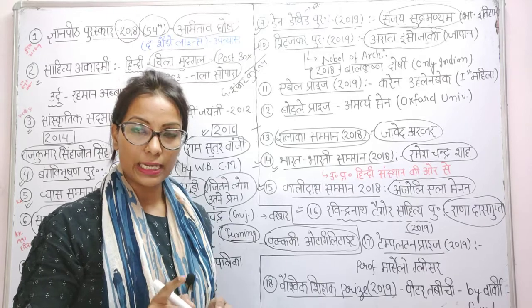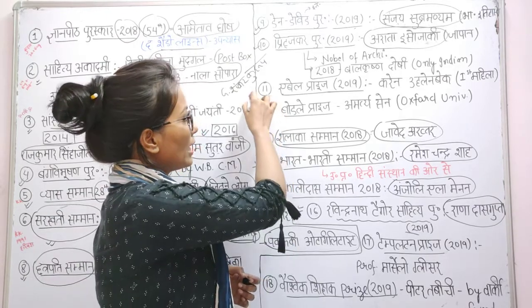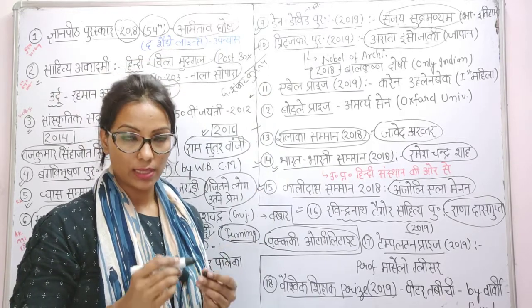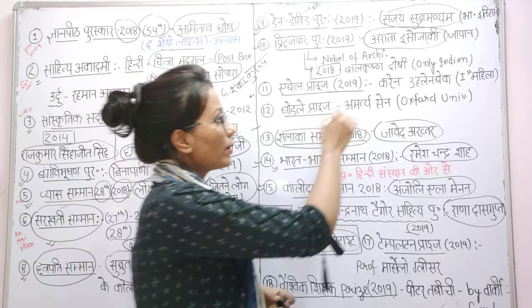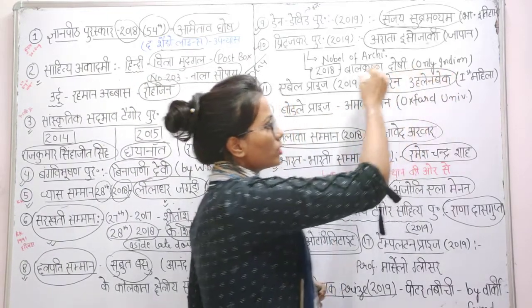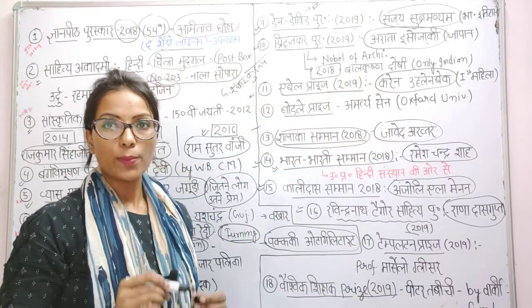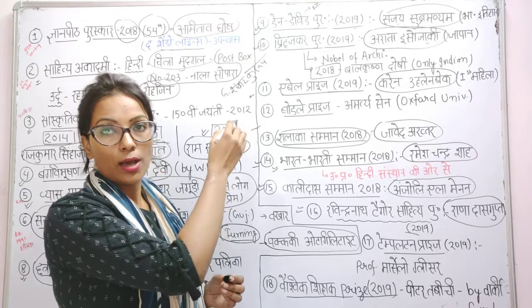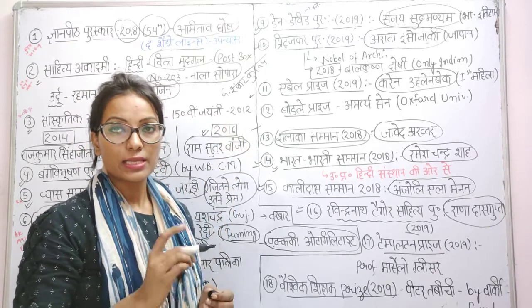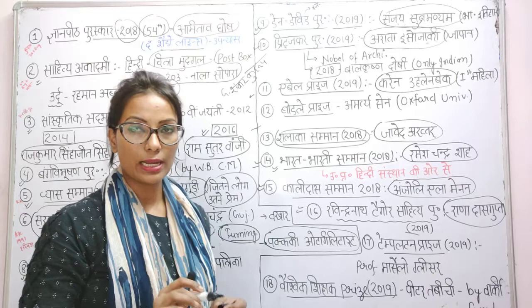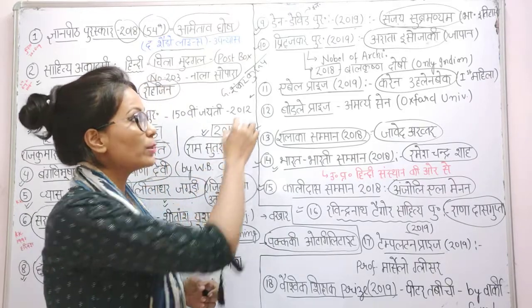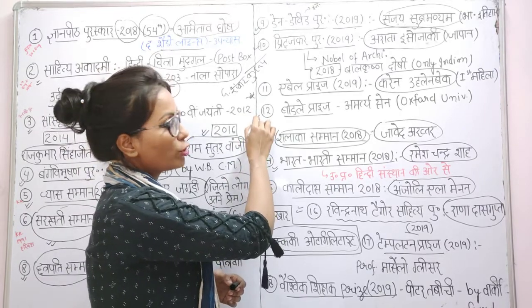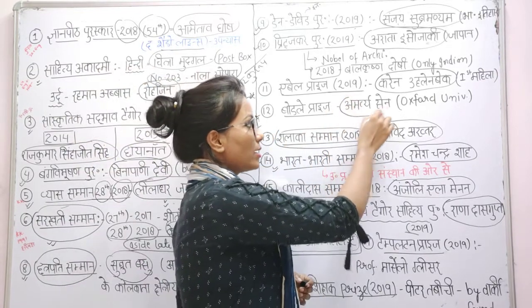This is notable because it is the first Indian to receive the Dan David Prize. The Abel Prize is called the Nobel of Maths. In 2018, the Abel Prize was given to Karen Uhlenbeck — this is the first woman to receive the Nobel of Maths, the Abel Prize.